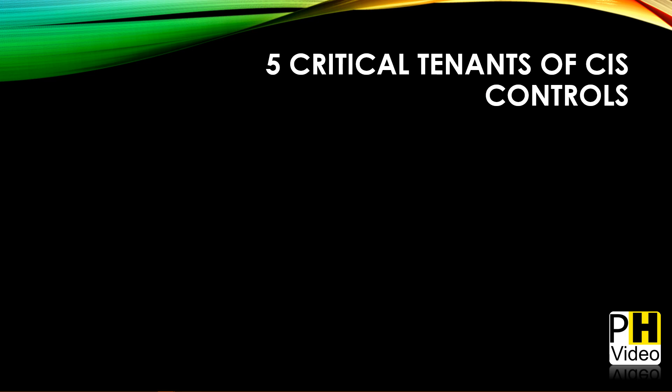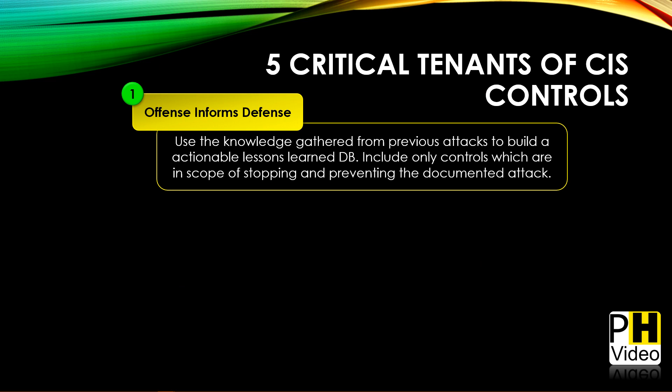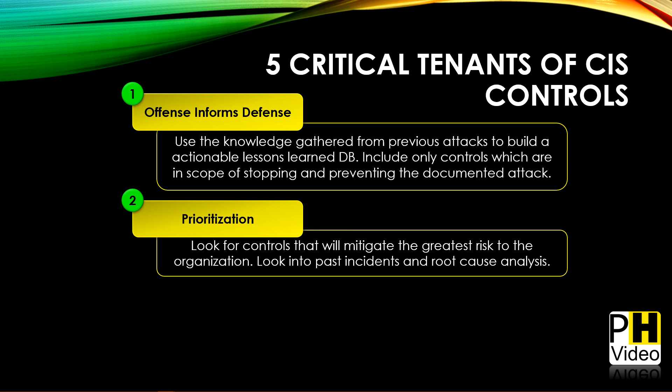CIS also has five critical tenants of CIS Controls. The first is offense informs defense — use knowledge gathered from previous attacks to build an actionable lessons-learned database, and include only controls in scope for stopping and preventing documented attacks. In practice, start by looking at your incident history — incidents being unexpected interruptions in services — find when things went wrong: servers unavailable, successful attacks, data breaches, and patch those first. Develop an offensive mentality in your organization; don't wait for attacks, be offensively prepared.